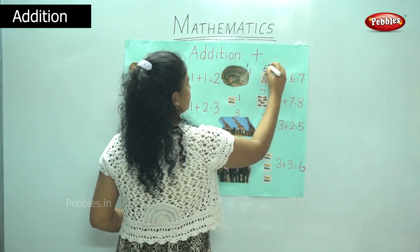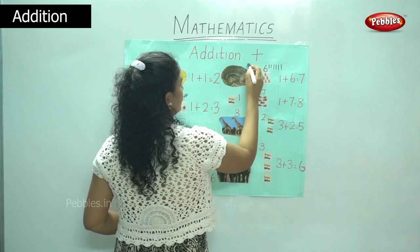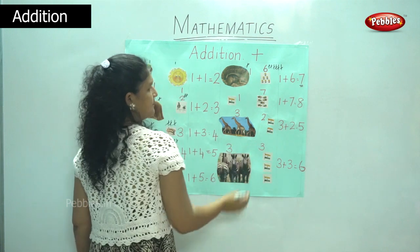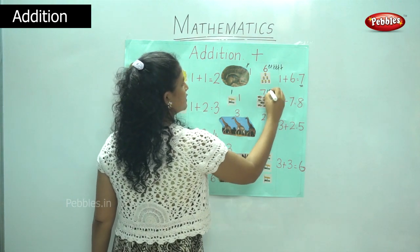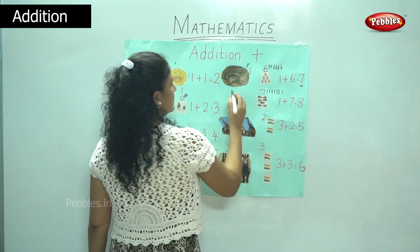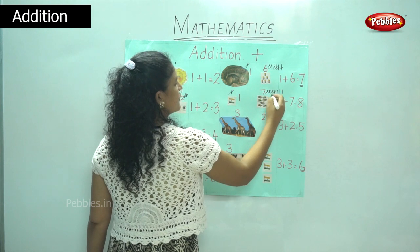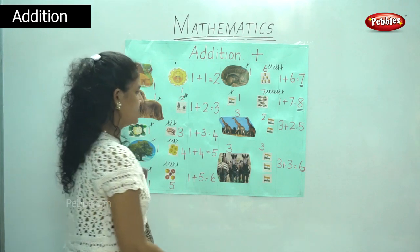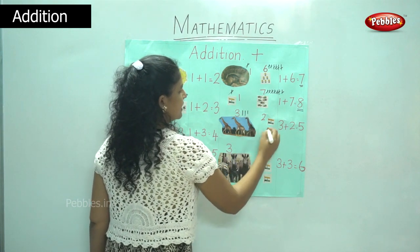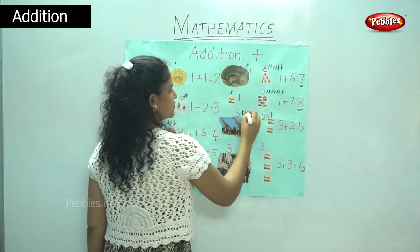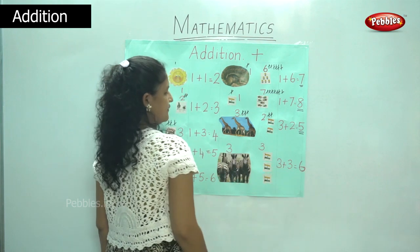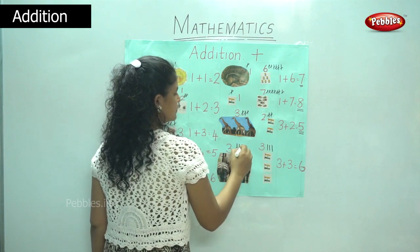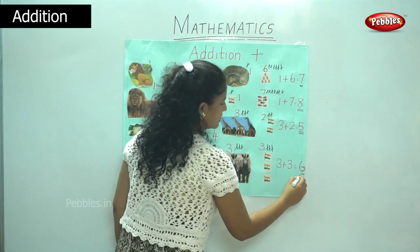Or you could use tally lines. One plus six — one, two, three, four, five, six, seven — you get number seven. One plus seven — one, two, three, four, five, six, seven, eight — you get the answer eight. Three plus two — one, two, three plus one, two — gives you one, two, three, four, five — the answer five. Three plus three gives you one, two, three, four, five, six — the answer six.